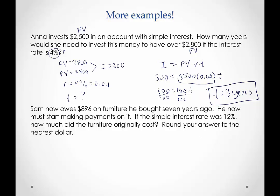In our last example, Sam now owes $896 on furniture he bought seven years ago. So even though it's current day, this would still be our future value, because this isn't at the time when he bought the furniture. He now must start making payments on it. If the simple interest rate was 12%, how much did the furniture originally cost? Round your answer to the nearest dollar.